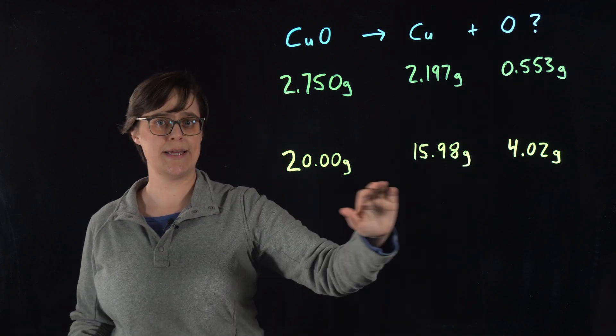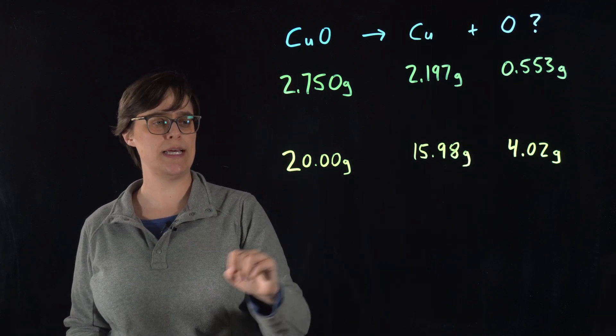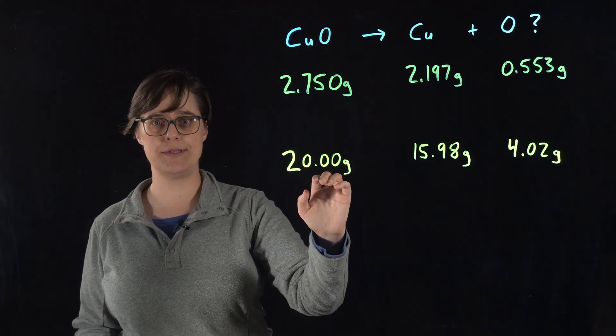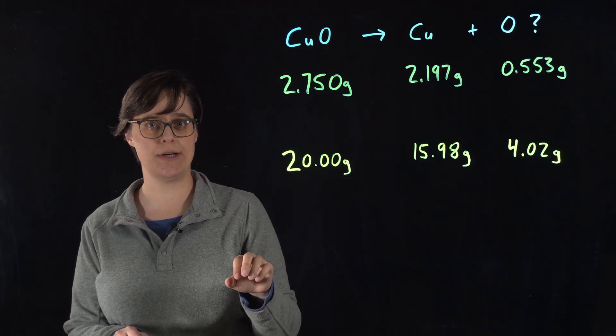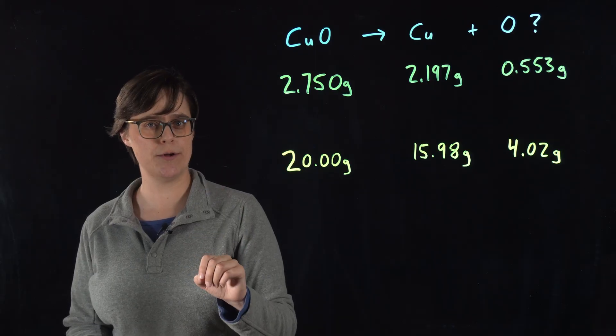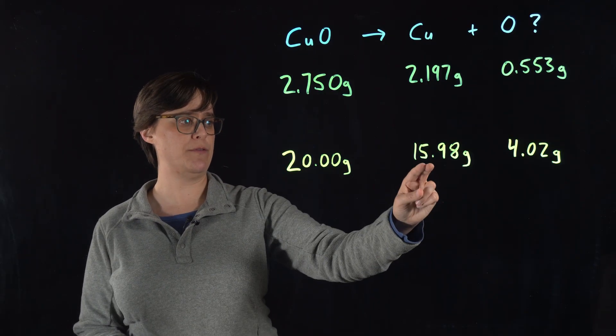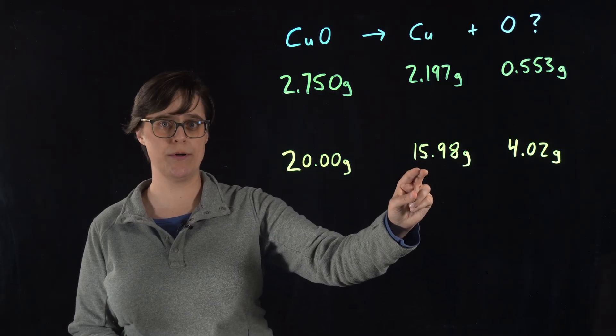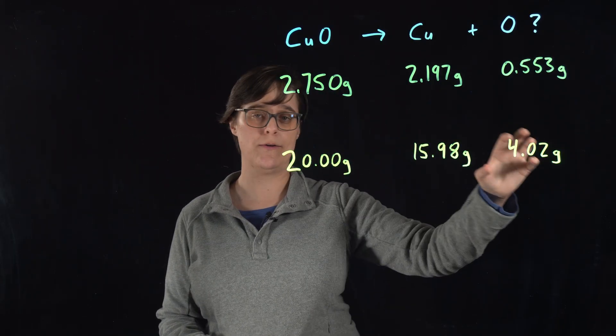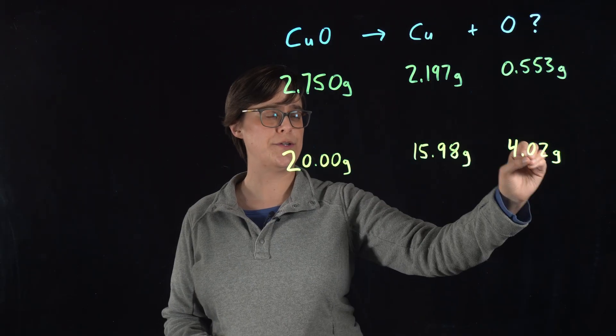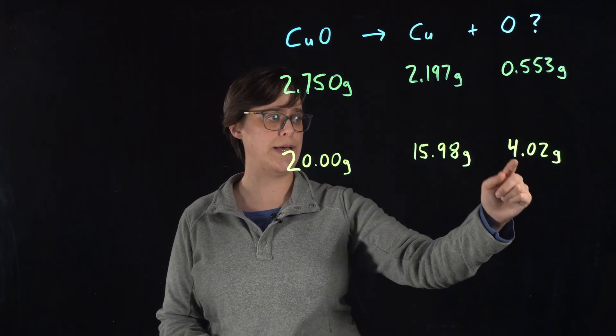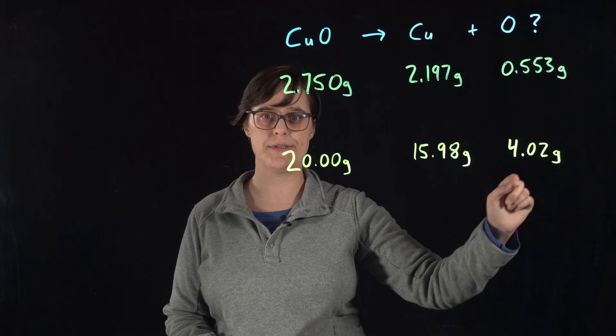Then in a second experiment, we obtain a sample of 20.00 grams of naturally occurring copper 2 oxide. And we make it undergo the same chemical reaction. We find that we're left with 15.98 grams of copper. And once again, we can calculate this difference to determine that our original sample had 4.02 grams of oxygen.